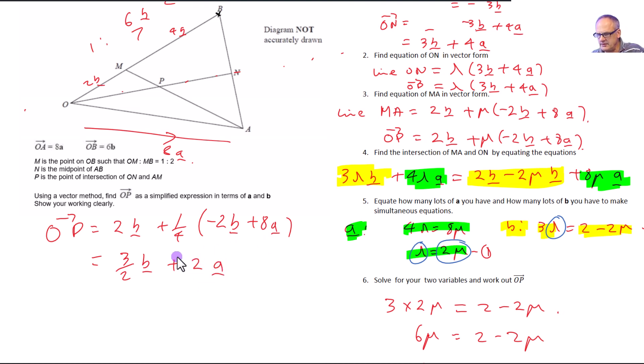Now of course, if I know that mu is a quarter, I can see that lambda is a half. And then I could put it into this equation here. And I get a half times 3B, which is just 3 over 2B. And I get a half times 4A, which is just 2A. And it's good that both my lines agree with each other on the position of OP. And there you have it.